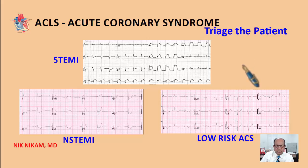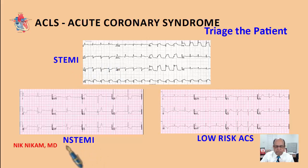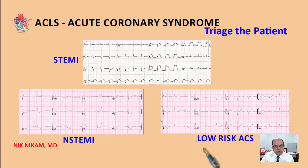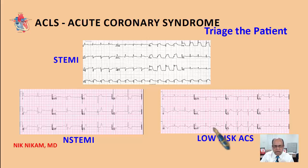Patients with acute coronary syndromes are triaged into three main categories: STEMI or ST segment elevation myocardial infarction, non-STEMI or non-ST segment elevation myocardial infarction, and low-risk acute coronary syndromes where there is no evidence of heart muscle damage, only minor ECG changes, but the chest pain still needs to be evaluated.